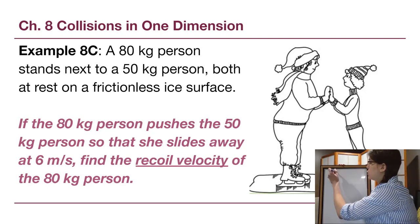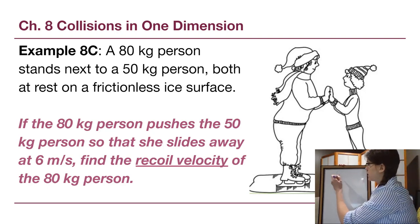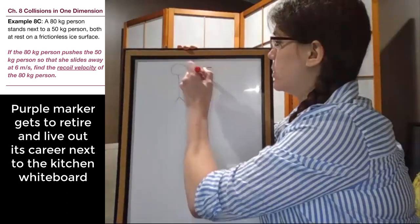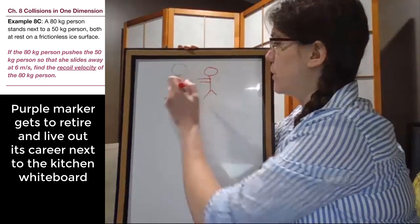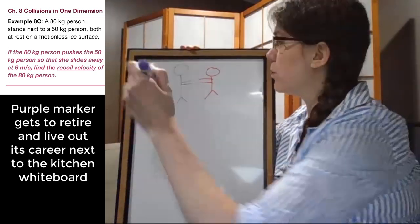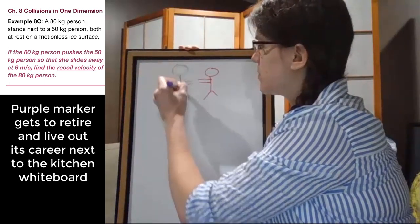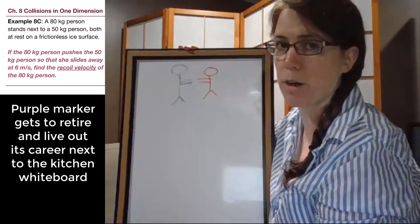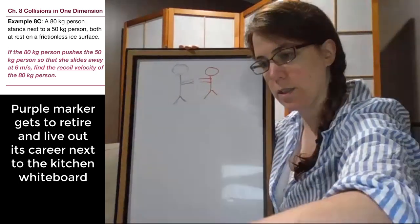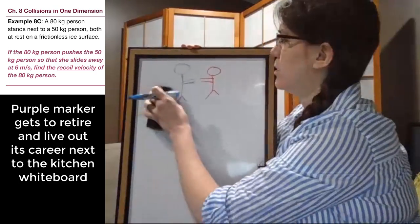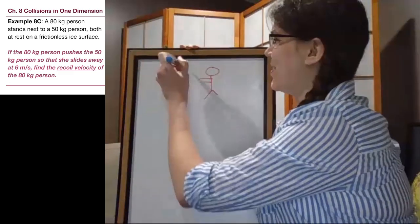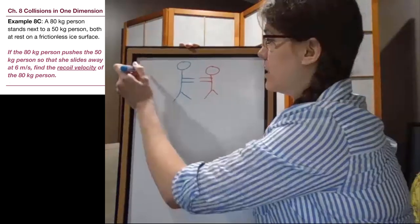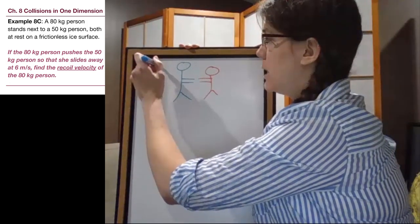So we have two people. We have person one and we have person two. For person number one, their mass is 80 kilograms.